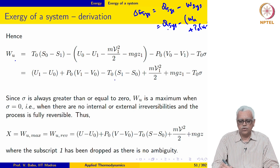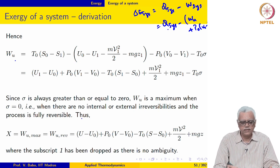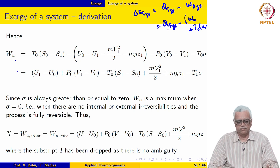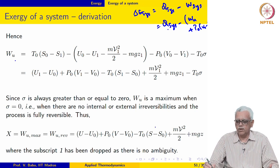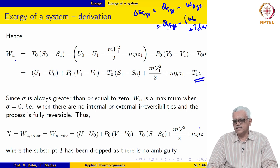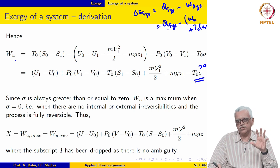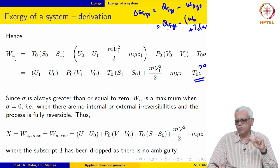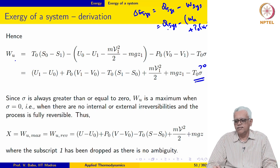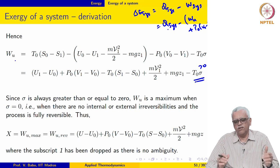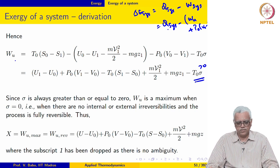So WU looks like this. Exergy of the system at state 1 is WU max. What is WU max? Sigma is always greater than 0, and this is the amount of entropy generated in the universe as a result of internal and external irreversibilities — both are accounted for. WU will be a maximum when the process is completely reversible, with no internal or external irreversibilities, which means sigma is equal to 0.